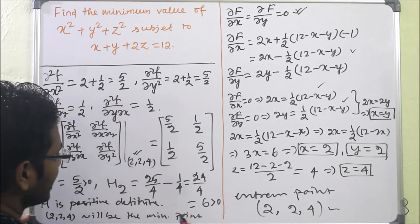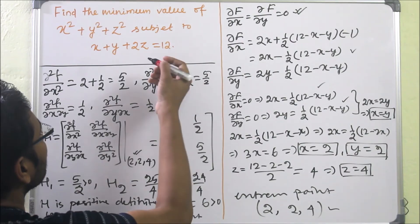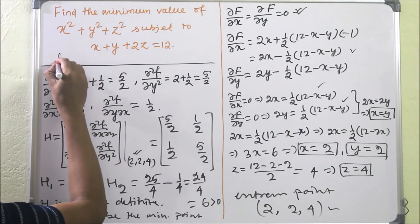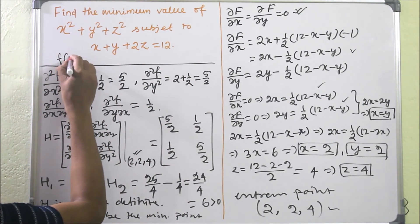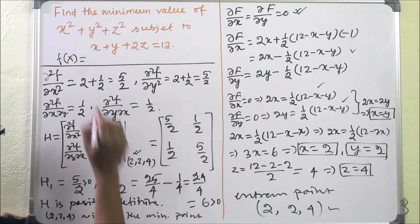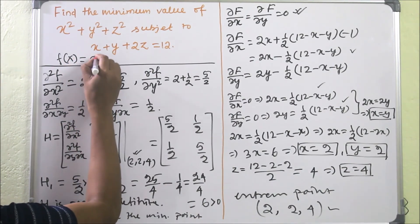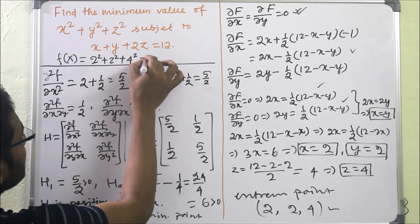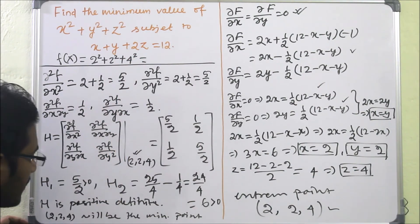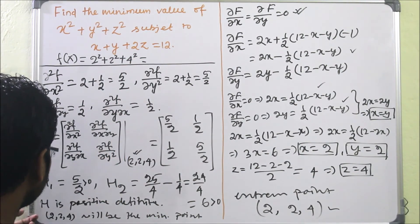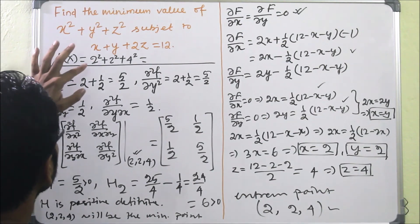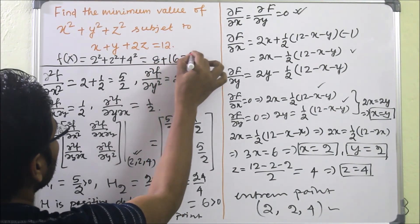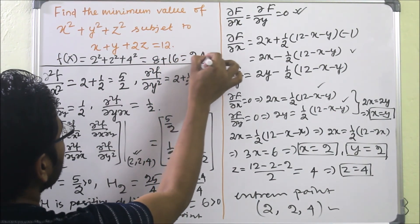At the minimum point (2, 2, 4), the function value is F = 2² + 2² + 4² = 4 + 4 + 16 = 24. So the minimum value is 24.